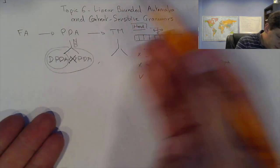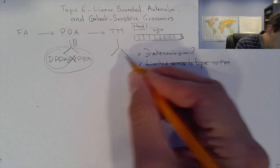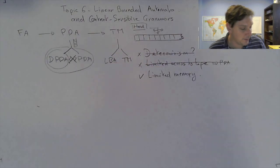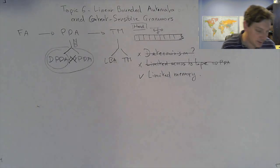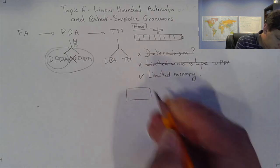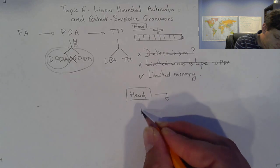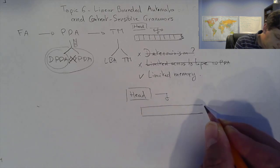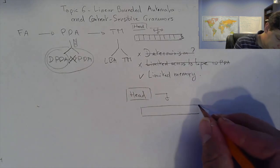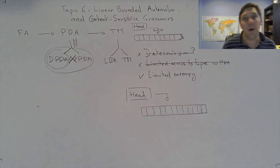So how does it work? It's really the same idea. You're going to have the Turing machine with unlimited memory and the linear bounded automaton. The idea is that you have the head and the tape, but instead of having unlimited memory, we actually bound the tape — the memory — by the size of the input.